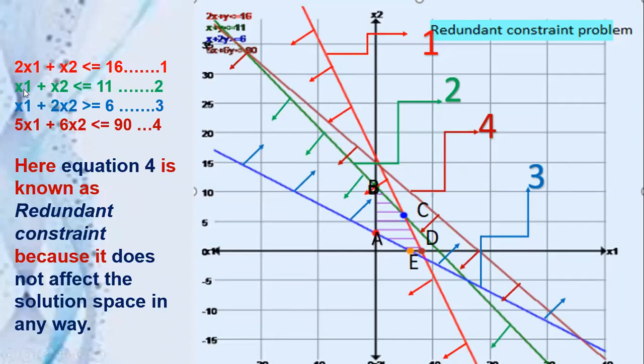Next is the second equation: x1 plus x2 less than or equal to 11, represented by the green line. Take any point below the green line, say (0,0). Is 0 less than 11? Yes, it satisfies the condition, so the arrow mark should be towards the origin.